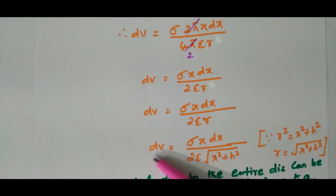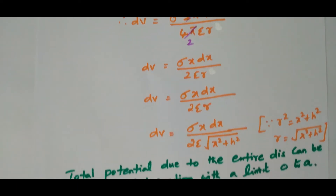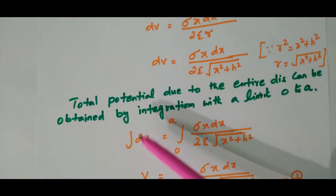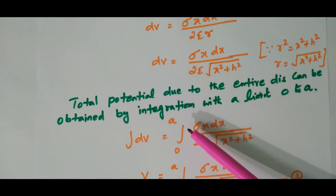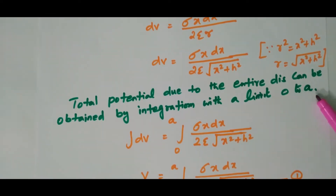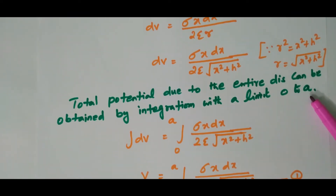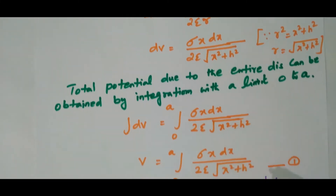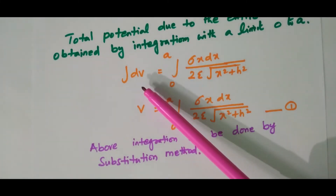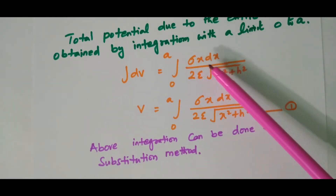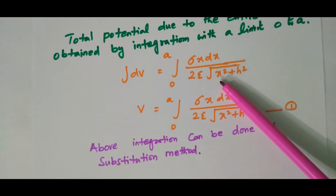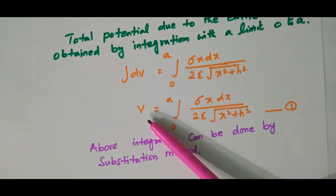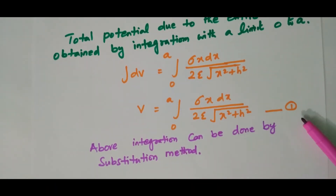This is the potential due to only a small charge. To get the total potential due to the entire disk, we integrate with limits from 0 to A, where A is the radius of the disk. There are n rings increasing from radius 0 to A, so V equals the integral from 0 to A of sigma x dx divided by 2 epsilon times the square root of x squared plus h squared. This is equation 1.